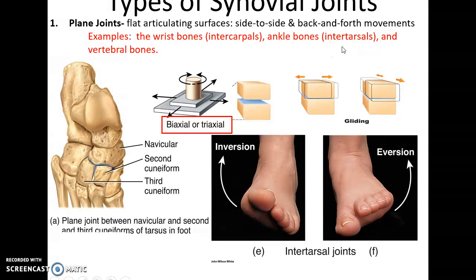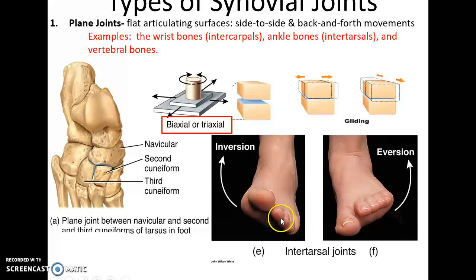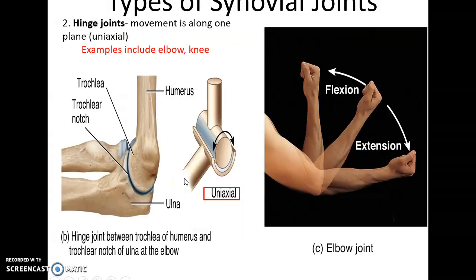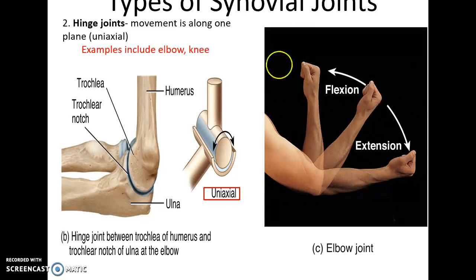Types of synovial joints — how they move and their structures. Plane joints have two flat surfaces coming together, allowing side-to-side or back-and-forth movements; they are biaxial. An example is the tarsals in the foot, allowing us to invert and evert the foot. Hinge joints have a rounded bone fitting into a depression or cup-like structure. These allow only one kind of movement, so hinge joints are uniaxial — the elbow joint, for instance, allows only flexion and extension.